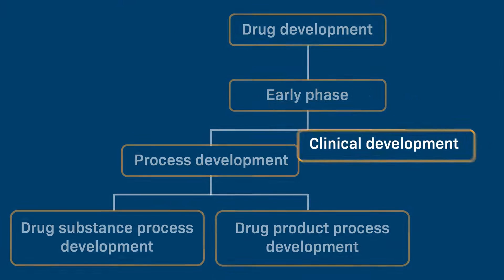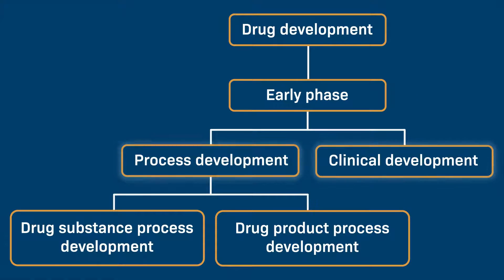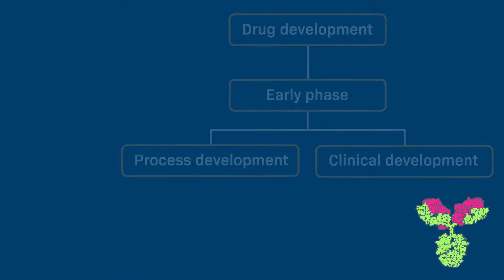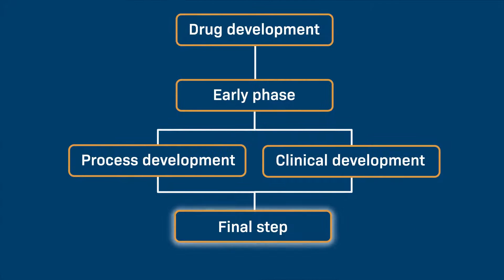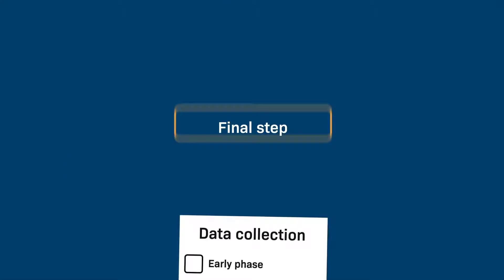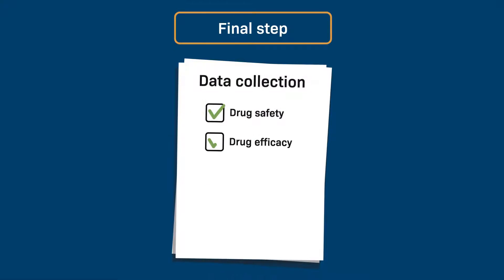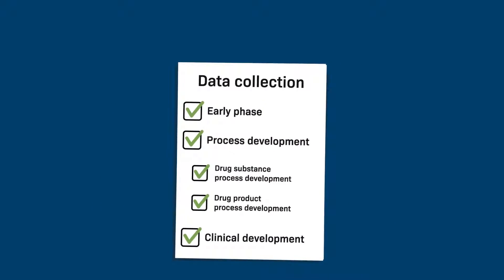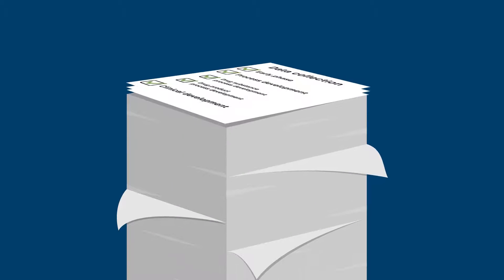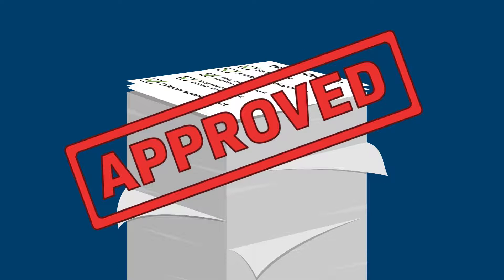Once process development and clinical development have been completed, a drug candidate can move on to the last step. This final step involves gathering all the data about various processes and the safety and efficacy of the drug candidate. This information is compiled and ultimately submitted to a regulatory body for approval.